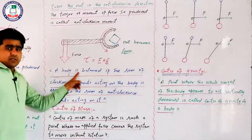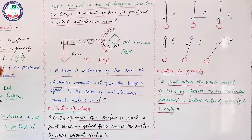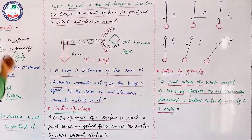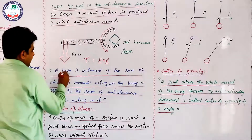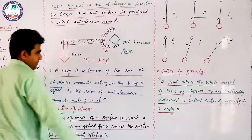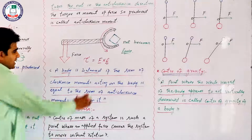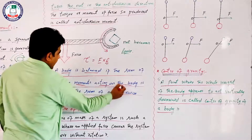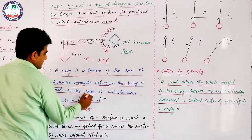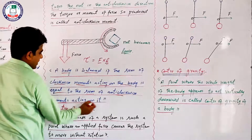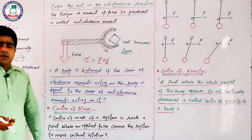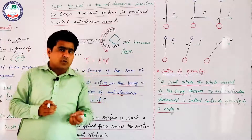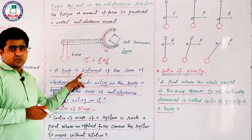अब Principle of Moments को define करते हैं। A body is balanced if the sum of clockwise moments acting on the body is equal to the sum of anti-clockwise moments acting on it। जब clockwise moment और anti-clockwise moment दोनों बराबर हो जाएंगे तो body balance हो जाएगी।